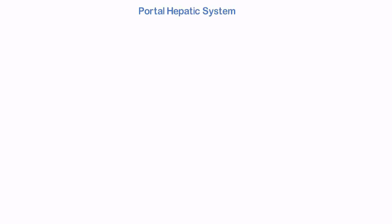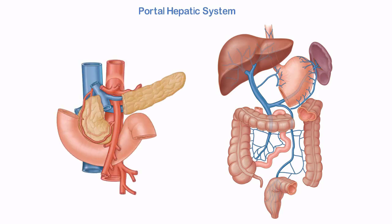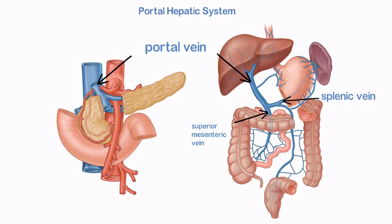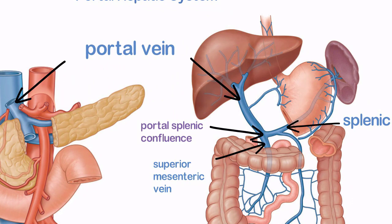The liver receives nutrient-rich blood from the gastrointestinal tract via the portal hepatic system. The major vessel of this system is the portal vein, which is formed in the retroperitoneum by the union of the superior mesenteric and splenic veins, posterior to the neck of the pancreas at the portal splenic confluence. It passes obliquely to the right, posterior to the hepatic artery within the lesser omentum, and enters the liver at the porta hepatis.